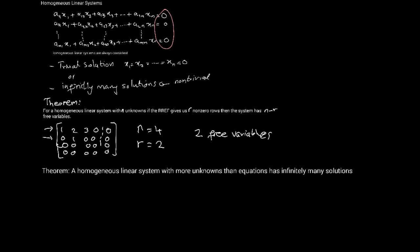This is the last thing I'll leave you with on another theorem on homogeneous linear systems. If a homogeneous linear system has more unknowns than the number of equations, then there are always going to be infinitely many solutions.